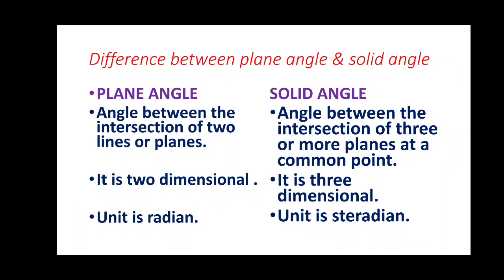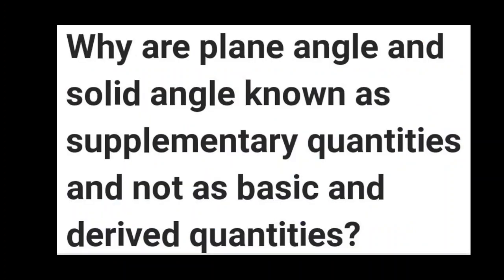Plane angle is the angle between the intersection of two lines or planes, and it is two-dimensional. Solid angle is the angle formed between the intersection of three or more planes at a common point, and it is three-dimensional. The SI unit of plane angle is radian (rad) and the SI unit of solid angle is steradian (sr).